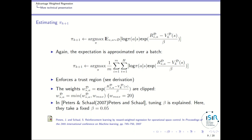In a paper by Peters and Schaal referenced here, they give a way to compute the best possible value for beta. But in the advantage weighted regression paper, they just take a fixed beta of 0.05 and don't study what would change if beta were computed as explained there.